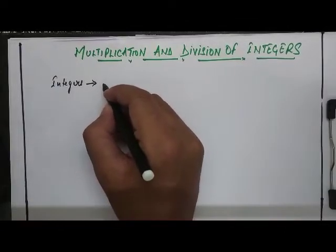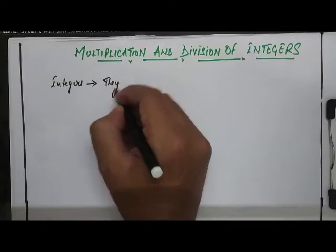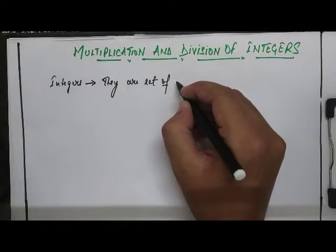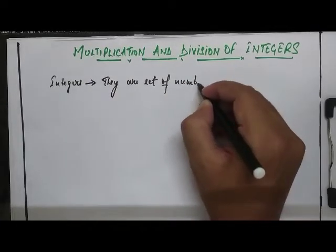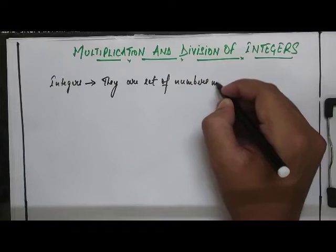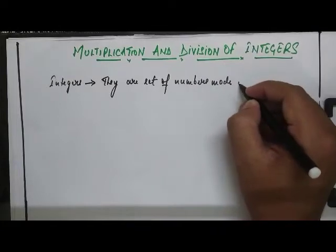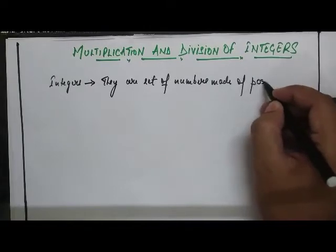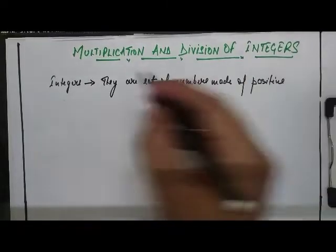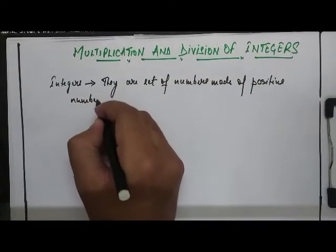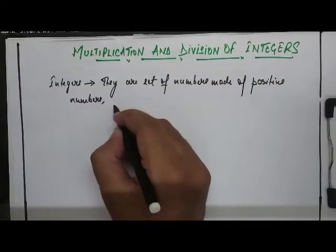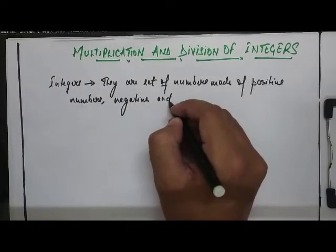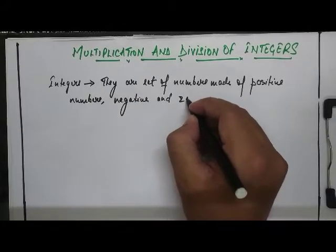Integers are set of numbers made up of positive numbers, negative numbers and the number 0 itself.